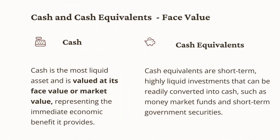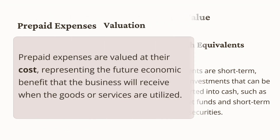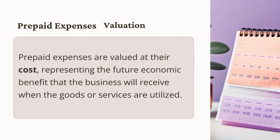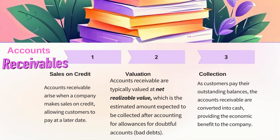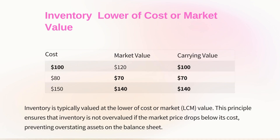Cash and cash equivalents are valued at face value or market value, as they represent cash on hand or assets easily convertible to cash. Prepaid expenses are valued at cost, representing payments made for goods or services to be received in the future. Accounts receivable are typically valued at net realizable value — the estimated amount expected to be collected after accounting for allowances for doubtful accounts, or bad debts. The allowance is the portion of receivables estimated to be uncollectable, so the balance sheet amount only shows the portion that is expected to be collected.